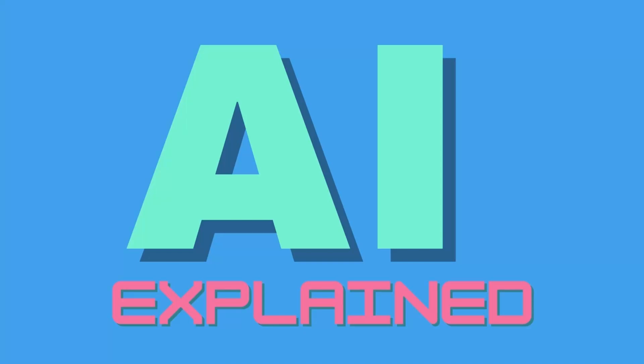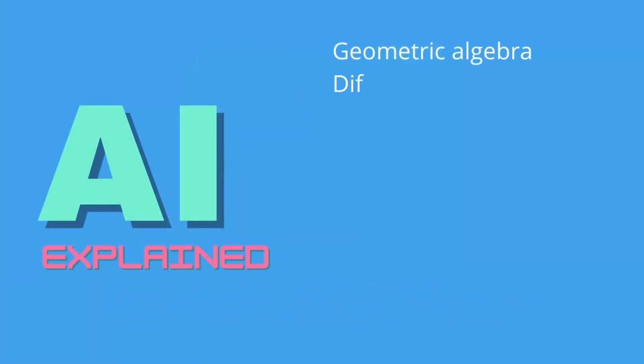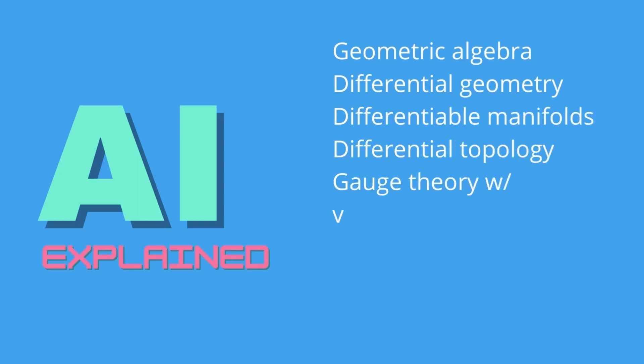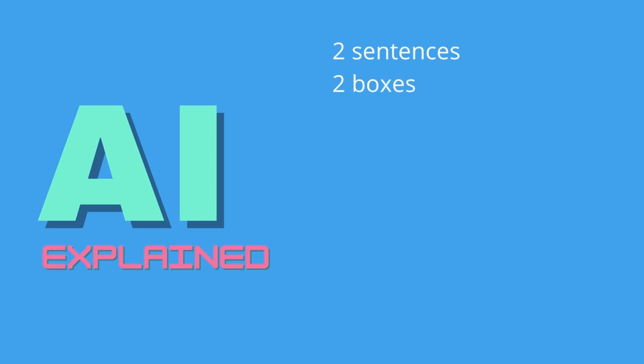It is important to understand what artificial intelligence is at its core. I could talk to you about differential geometry or differential topology, about vector bundles or about supercomputers where we compute AI, but let me visualize it in two sentences, two boxes and two symbols.